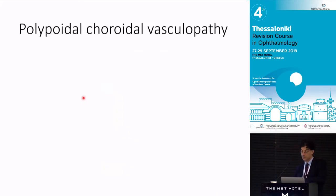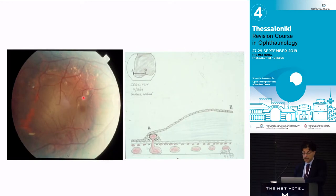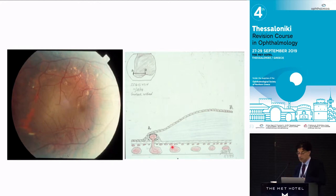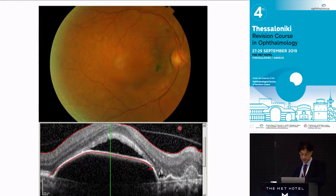Polypoidal choroidal vasculopathy was originally described by Yannuzzi and Gass. The first ever described case involved a serous PED in a hypertensive African-American female with reddish nodules around the edge. Before OCT, Don Gass drew a hypothesis that large choroidal vessels were herniating above Bruch's membrane into the sub-RPE space — a modern case shows serous PED, elevations, reddish nodules, and on ICG, multiple nodules with a branching vascular network.